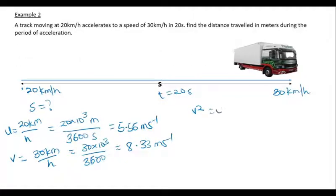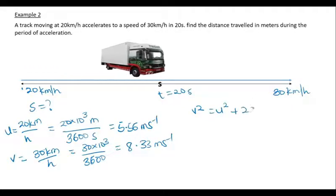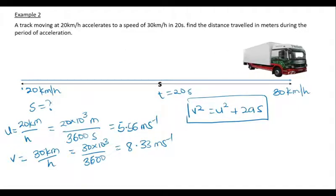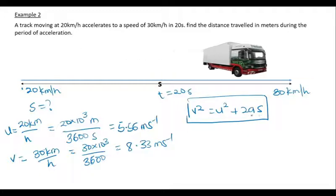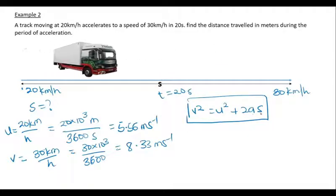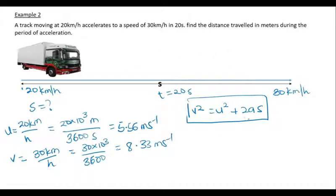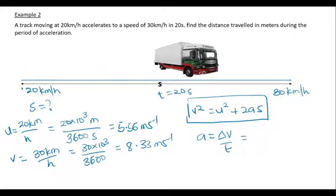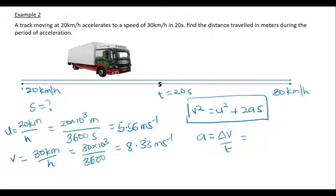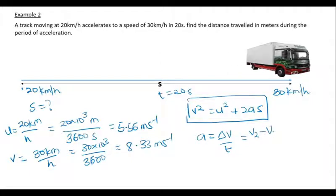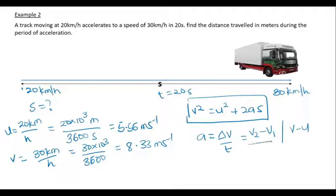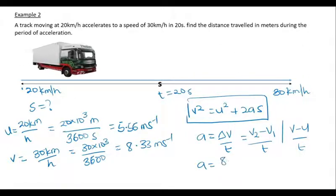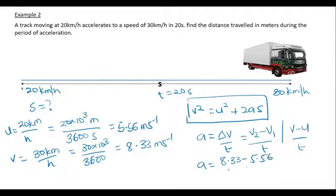We will use the formula V² = U² + 2aS. We have the initial velocity of 5.56 m/s and the final velocity of 8.33 m/s, but we don't have the acceleration. We need to find acceleration first. Acceleration is the rate of change in velocity: a = ΔV / T = (V − U) / T. So the acceleration = (8.33 − 5.56) / 20.